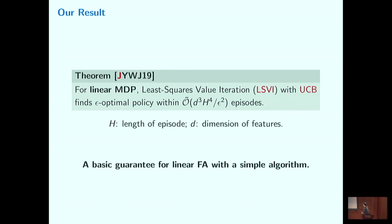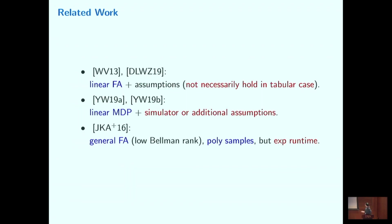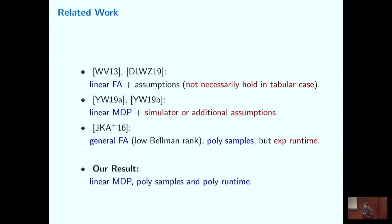The main takeaway is we provide a basic guarantee for the linear function approximation case using a simple algorithm — least squares value iteration with a UCB bonus. There are also wonderful prior works in this area, including work by Lin Yang and Mindy Wang and also John Langford. Some prior work applies to more general settings, but when applied to the linear MDP setting they either require additional assumptions or require exponential runtime. Our result is the first in the linear MDP setting without any additional assumptions that achieves polynomial samples and polynomial runtime.